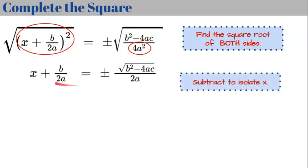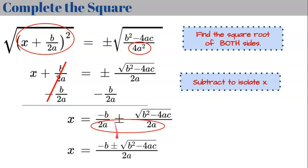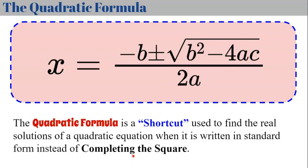To solve for x, we subtract b over 2a from each side, giving x equals negative b over 2a plus or minus the square root of b squared minus 4ac over 2a. Writing this over one common denominator gives us x equals negative b plus or minus the square root of b squared minus 4ac, all divided by 2a. That is the quadratic formula — a shortcut for finding real solutions of a quadratic equation in standard form, instead of going through all the steps of completing the square.